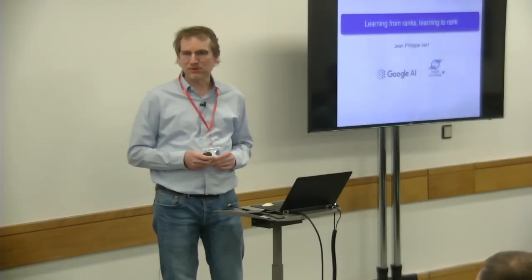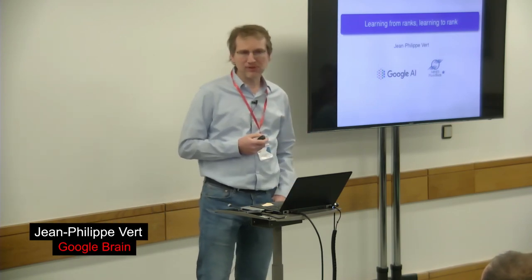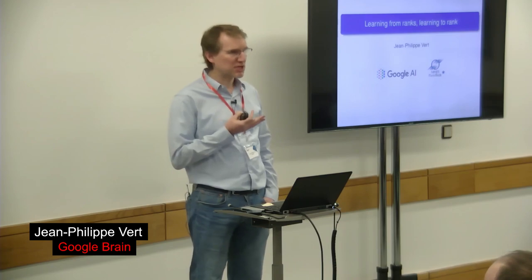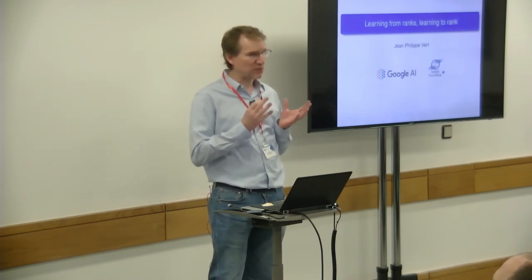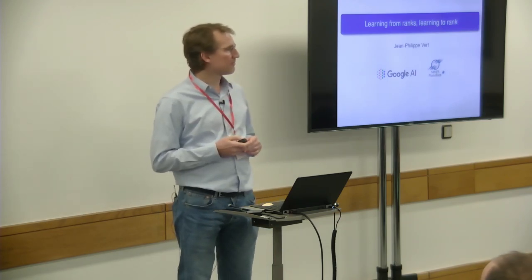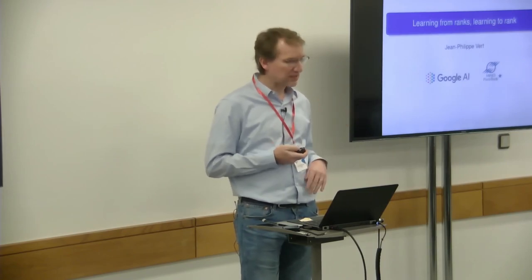I'd like to share with you some things we did in the last few years on a topic involving machine learning for discrete objects. I will focus mostly on permutations and rankings, and some ways to deal with this data in the modern machine learning way — which is to try to do optimization with gradients when you have such discrete data.